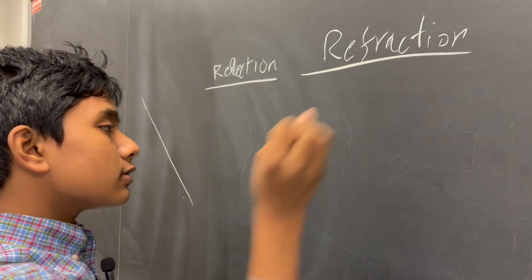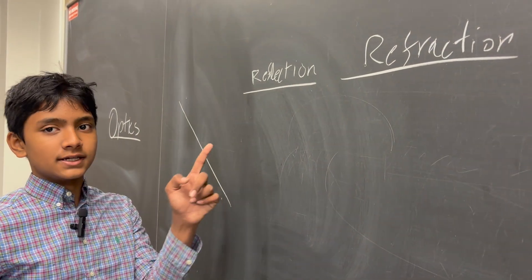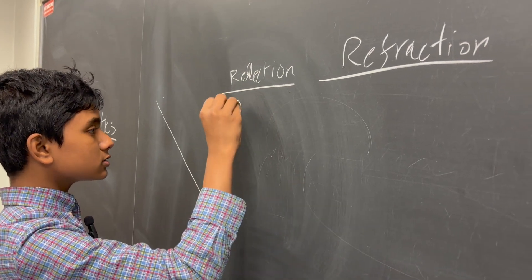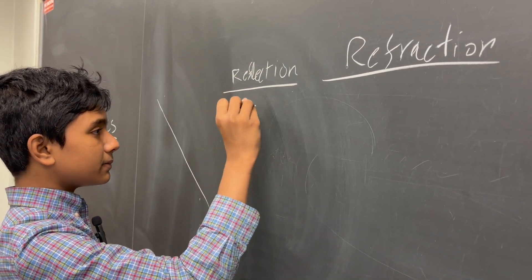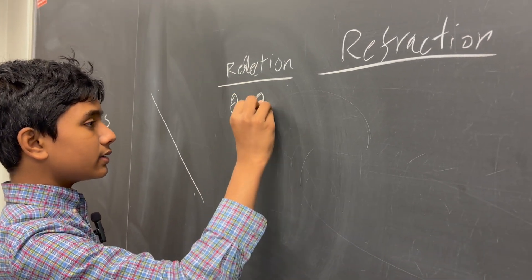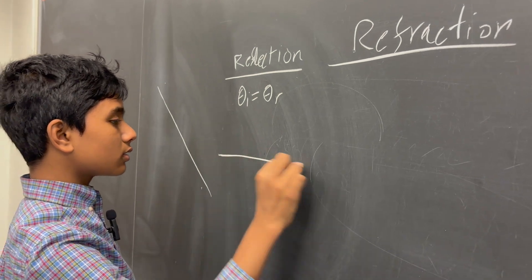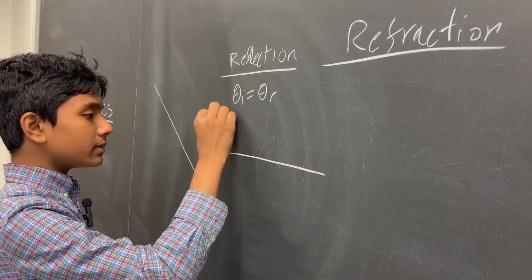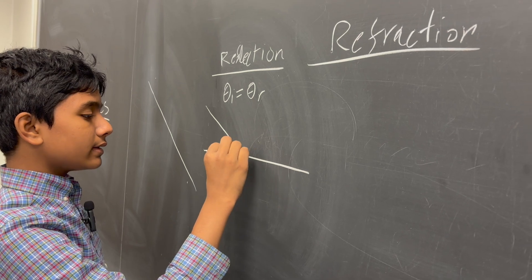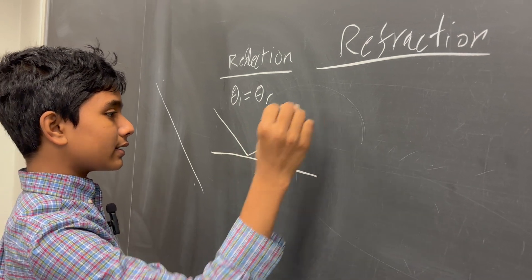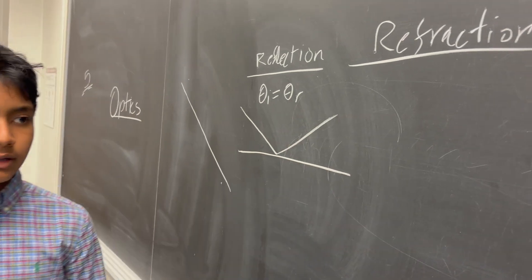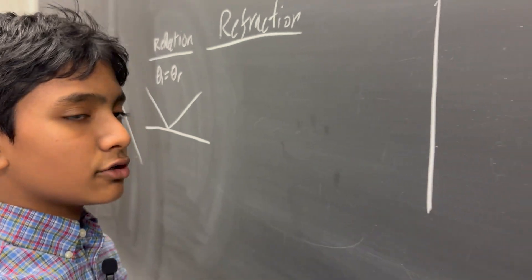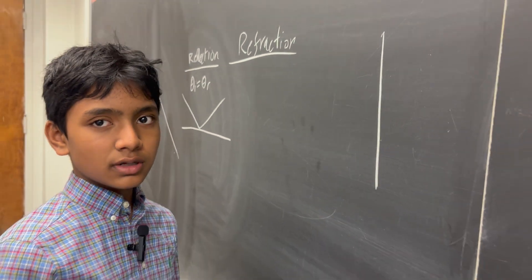First up, we've got reflection. Reflection just follows a very simple law: theta I equals theta R. You have a plain mirror and anything over here gets completely reflected. You probably have a mirror like this in your dressing room or somewhere else.